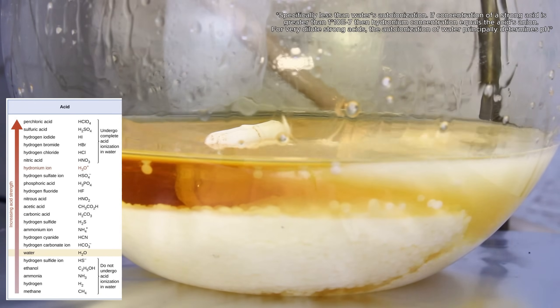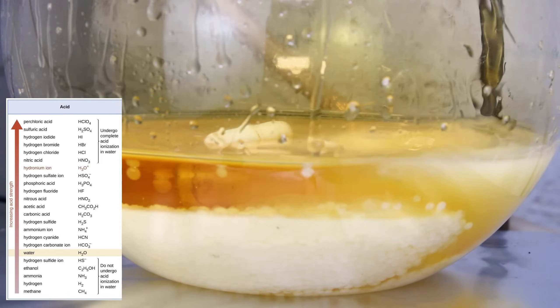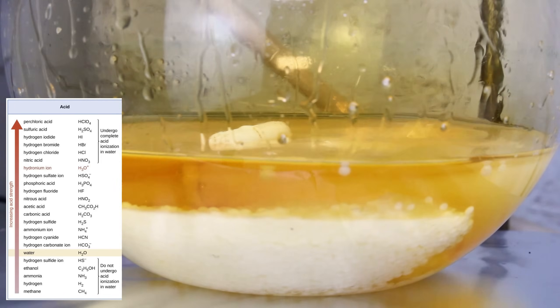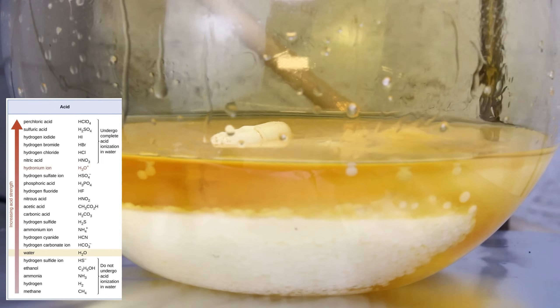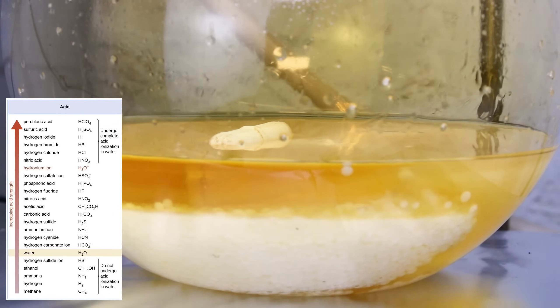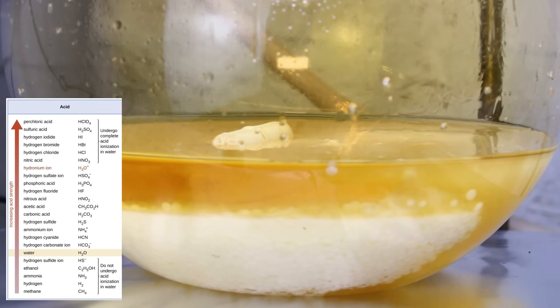However, not all strong acids are equally strong. Sulfuric acid is stronger than nitric acid, and so it will readily give up hydrogen to nitrate forming nitric acid under relatively mild conditions.